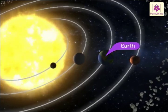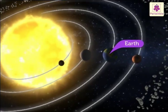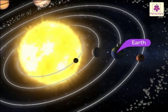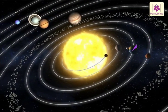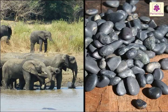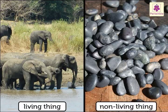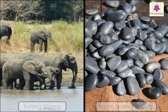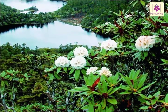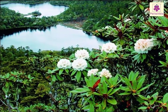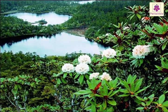Earth is the only planet in our solar system which supports life. Everything, every single living or non-living thing on Earth, including Earth itself, forms the environment. Earth and environment are synonymous.